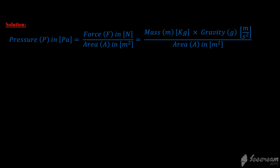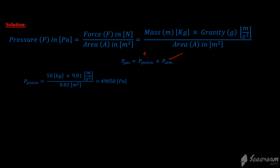We know that pressure equals force over area, and force equals mass times gravity. Using these, we find the pressure of the piston: 50 kilograms times 9.81 divided by 0.01 meter squared, which gives us 49,050 Pascals.